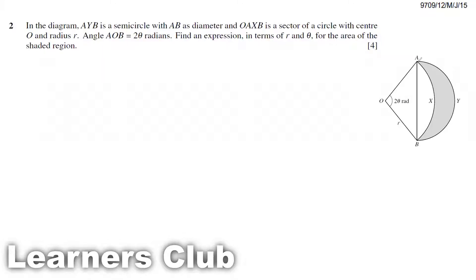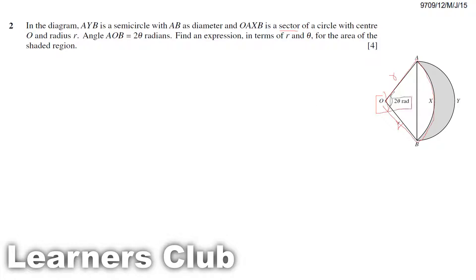This is a semicircle with diameter AB. OAXB is a sector of a circle with center O, so O is the center and the sector has a radius of R. The angle AOB is 2 theta, as given.